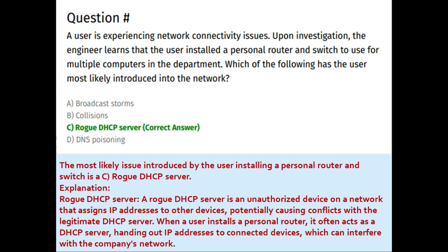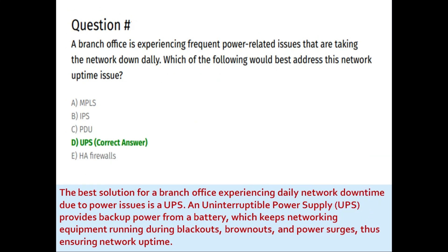Next question: a user is experiencing network connectivity issues. Upon investigation, the engineer learns that the user installed a personal router and switch to use for multiple computers in the department. Which of the following has the user most likely introduced into the network? Option A: broadcast storms, Option B: collision, Option C: rogue DHCP server, Option D: DNS poisoning. The correct answer is C: rogue DHCP server. A rogue DHCP server is an unauthorized device that assigns IP addresses, potentially causing conflicts with the legitimate DHCP server. When a user installs a personal router, it often acts as a DHCP server, which can interfere with the company's network.